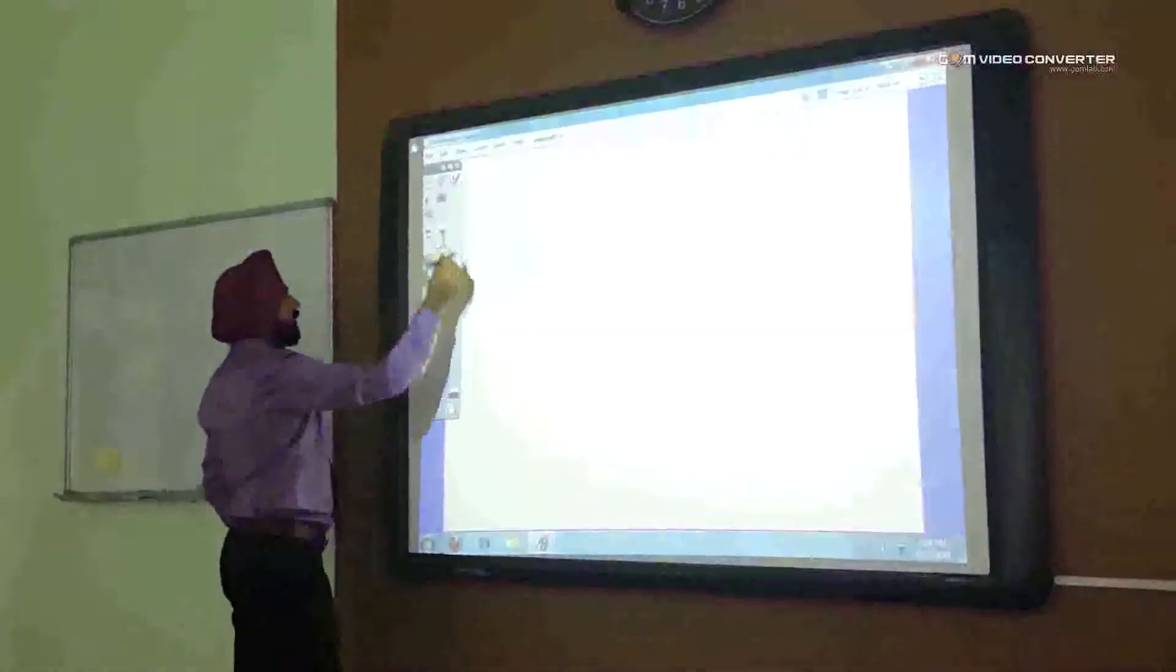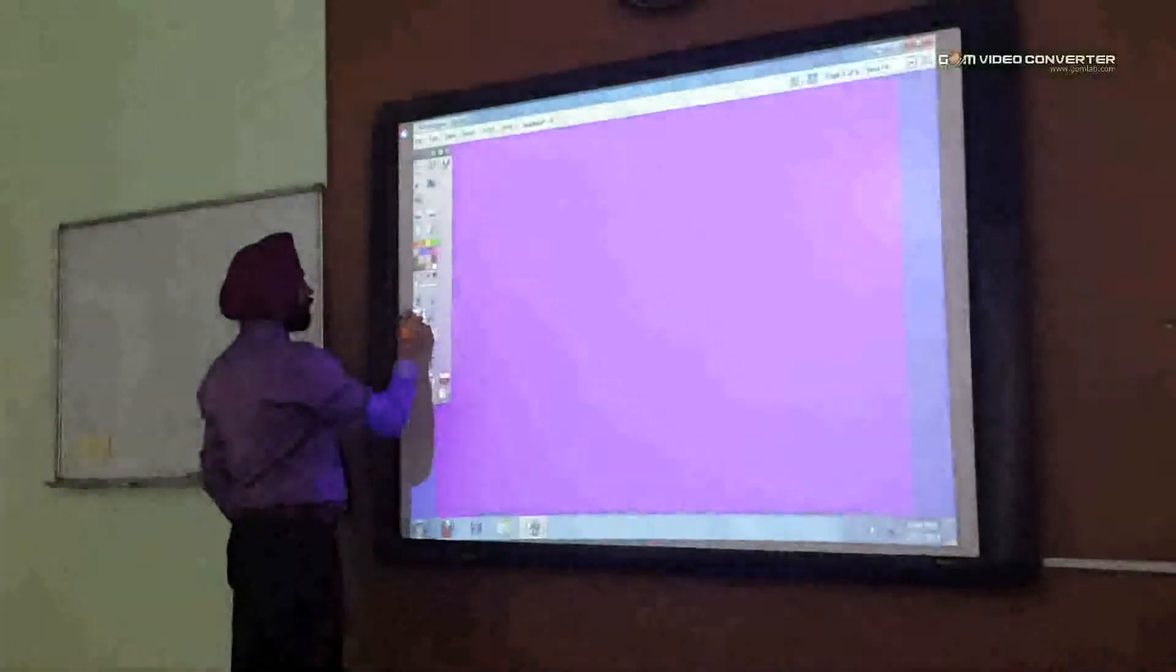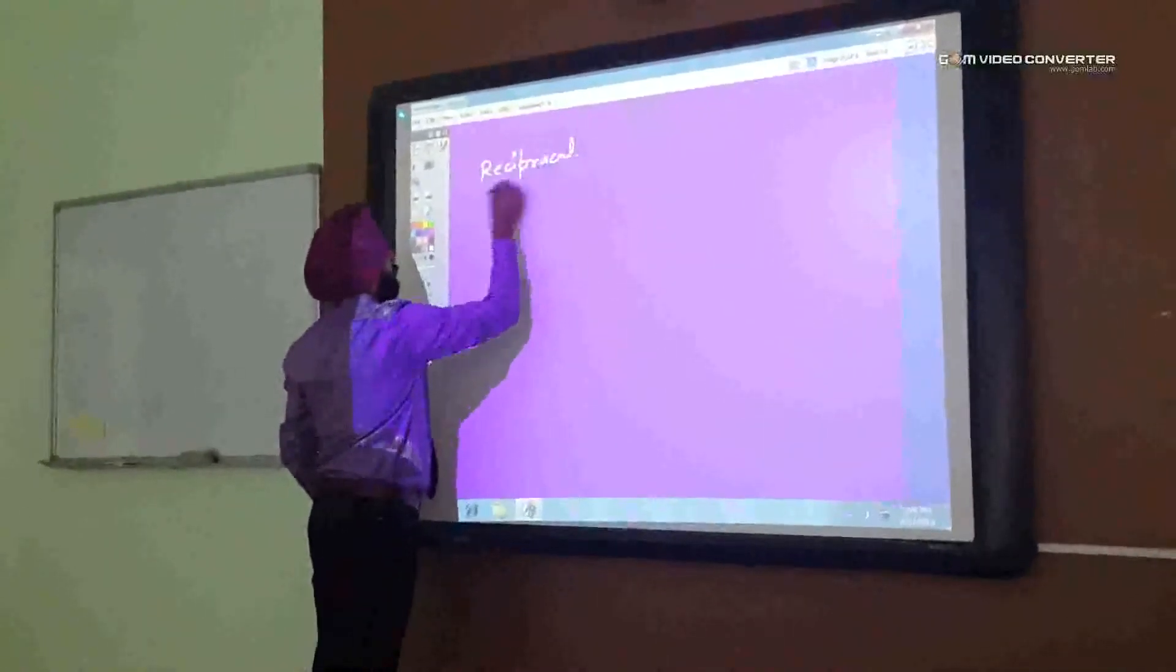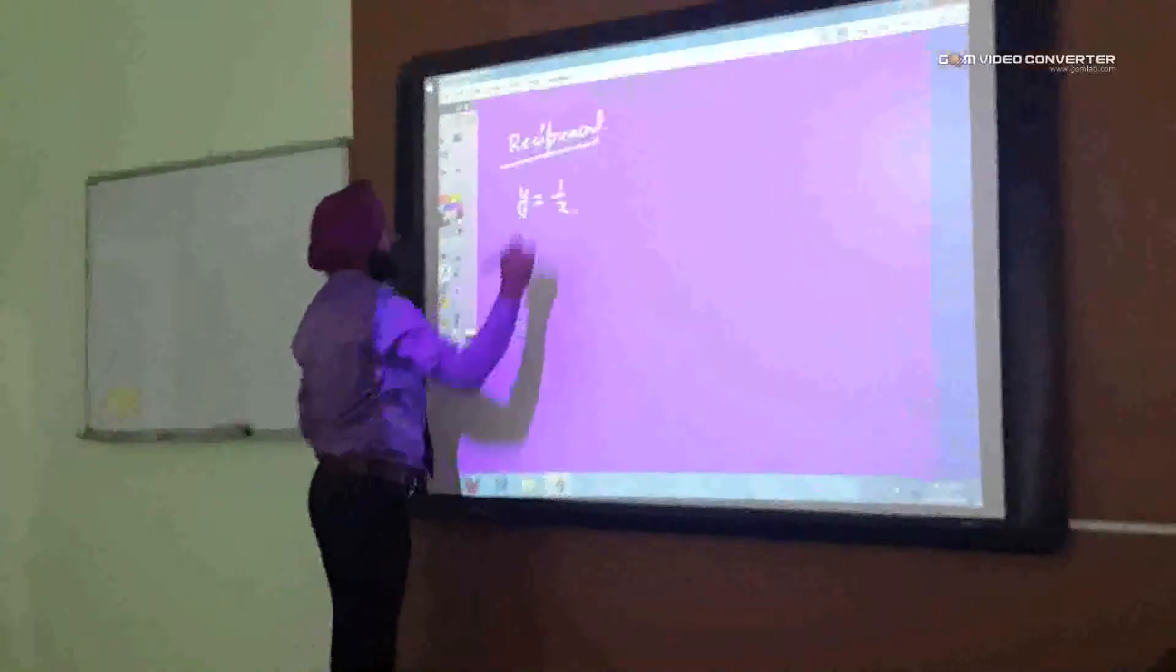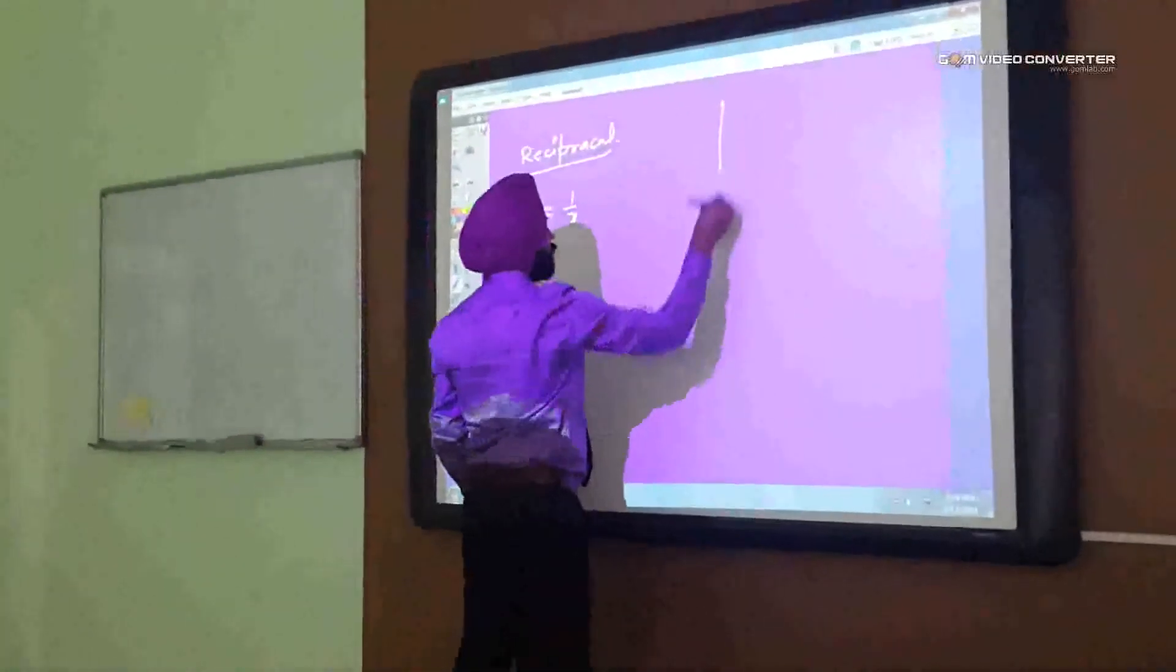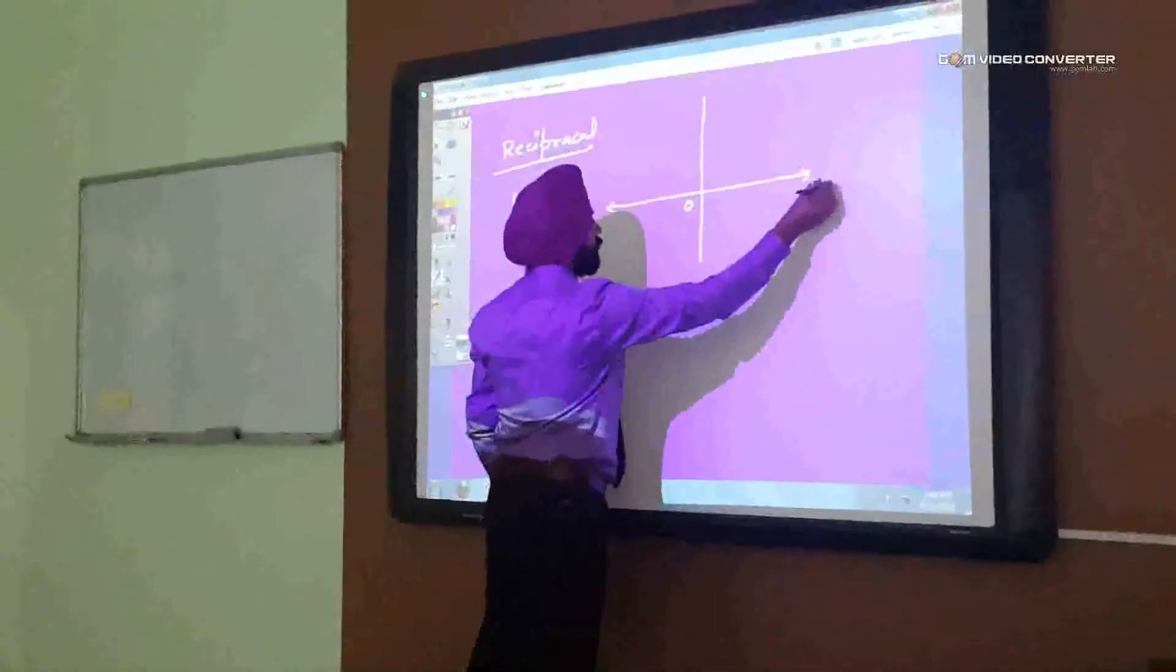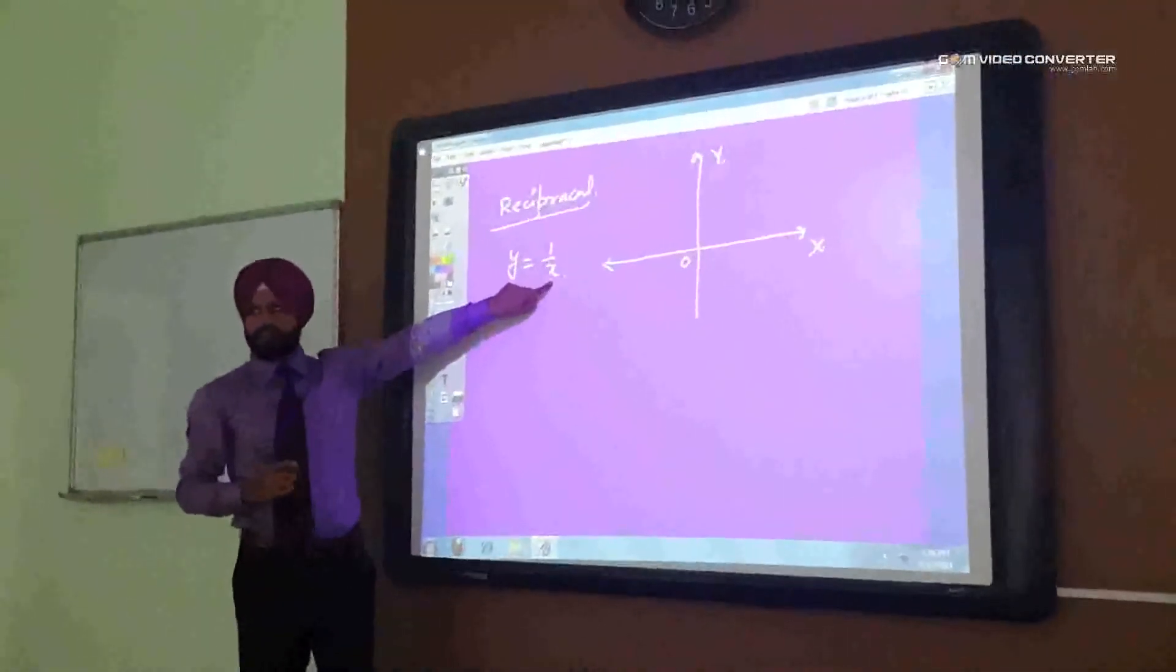Reciprocal x transformation. Y is equal to 1 by x. Then what is the standard curve? As I told you, 0, 0, x and y for minimum value of x